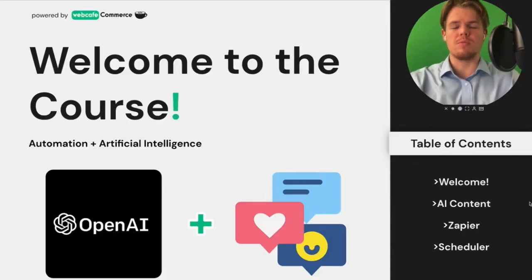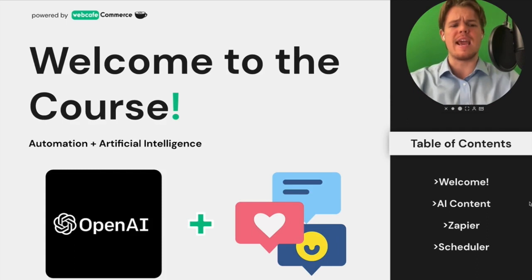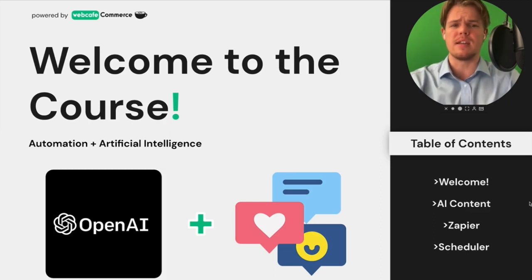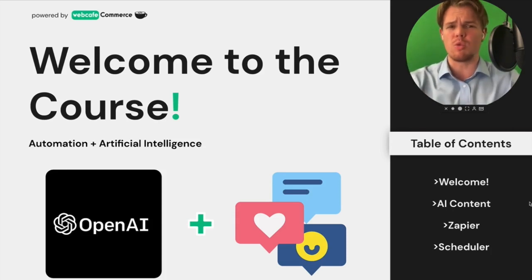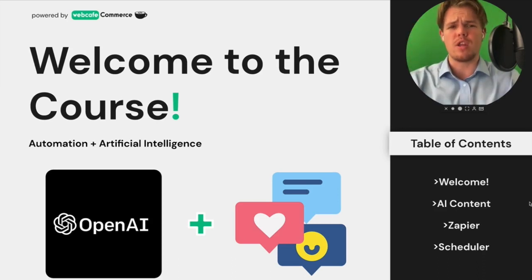My name is Corbin Brown and welcome to the course on social media management, specifically with ChatGPT and Zapier. If you look below me, you're going to see a table of contents at the beginning of every single one of these lessons, so you can get an idea of what's going to happen within that lesson. In the description, you'll also find resource links throughout every lesson — either Zapier templates free to use, or prompts used in the lessons themselves, which you can download.